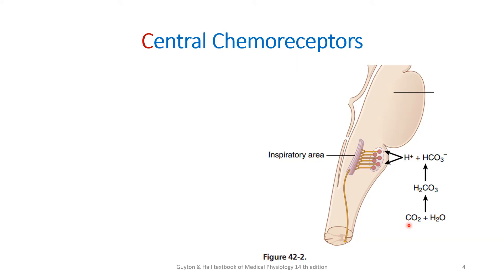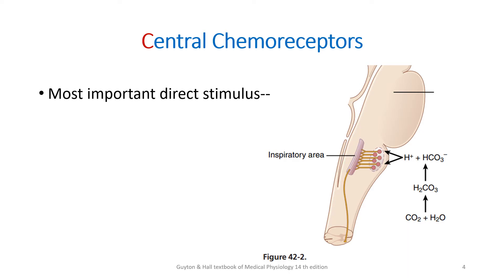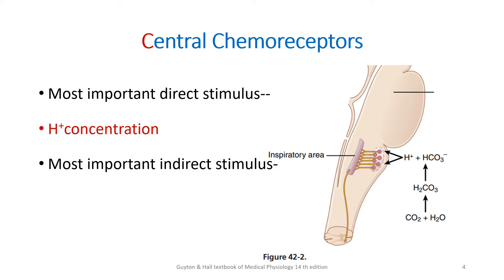These medullary chemosensitive areas are actually more sensitive to H plus, but H plus cannot cross the blood-brain barrier, so they detect carbon dioxide in an indirect way. Carbon dioxide reacts with water to form H2CO3, which then dissociates to HCO3 minus and H plus, and this is detected by the chemosensitive area. The most important direct stimulus is H plus concentration and the most important indirect stimulus is the partial pressure of carbon dioxide.